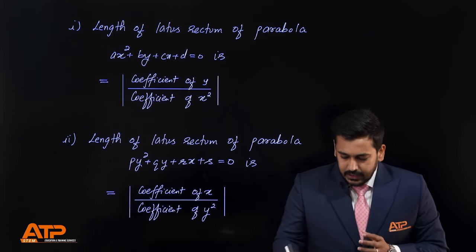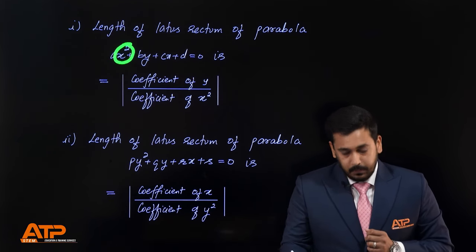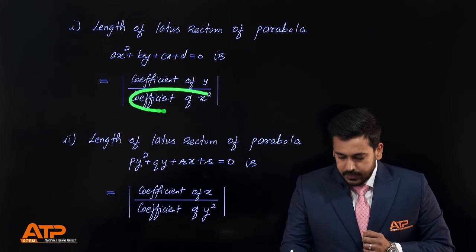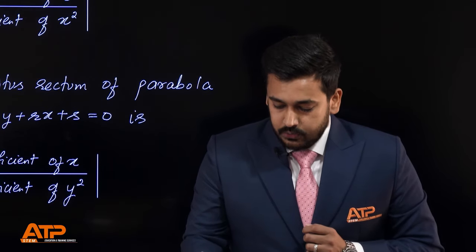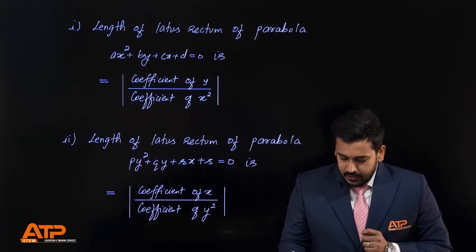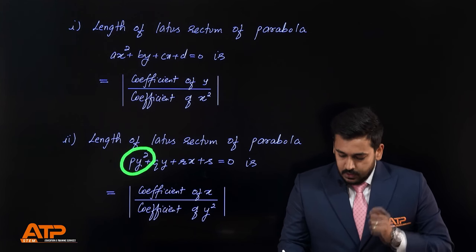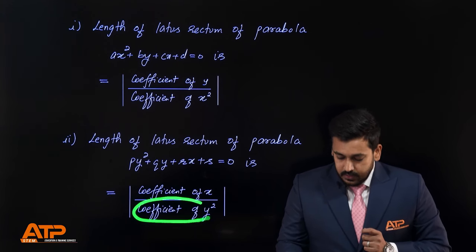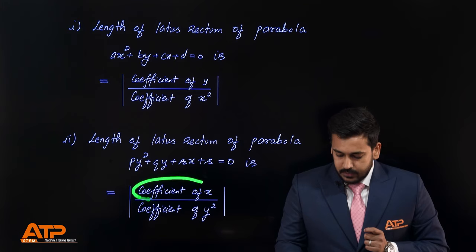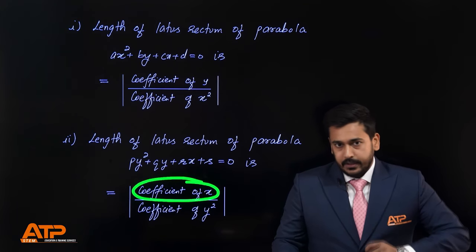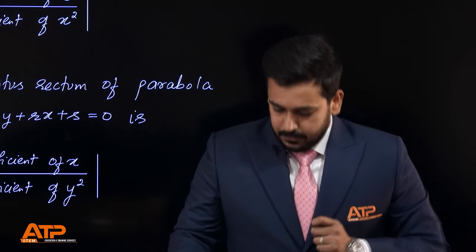The idea is: if the equation is in x² form, the coefficient of x² will be in the denominator and the coefficient of y will be in the numerator. And if it is in y² form, the coefficient of y² will be in the denominator and the coefficient of x will be in the numerator. Let's look at this trick using some examples.